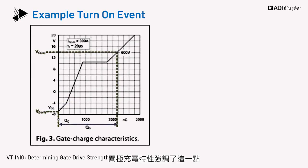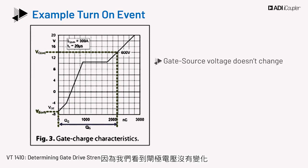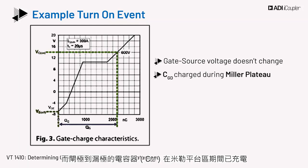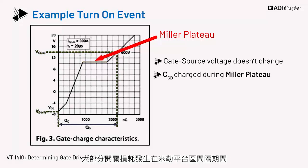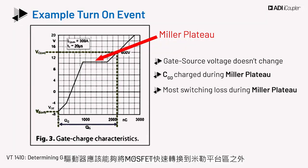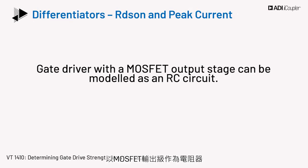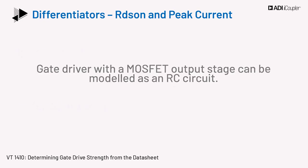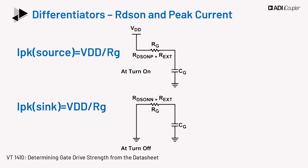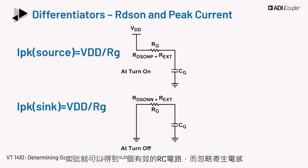The gate charge characteristics emphasize this — we can see that the gate voltage doesn't change, and the gate-to-drain capacitor, CGD, is charged during the Miller plateau. The Miller plateau interval is when most of the switching loss occurs, and the driver should be able to transition the MOSFET gate quickly out of the Miller plateau region. We can model the power device as a capacitor and the gate driver with a MOSFET output stage as a resistor. Combining the on-resistance of the output MOSFET of the driver and the external gate resistor with the gate capacitor, we effectively obtain just an RC circuit, while ignoring the parasitic inductances.